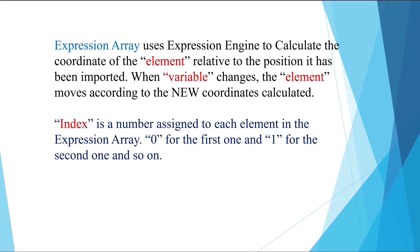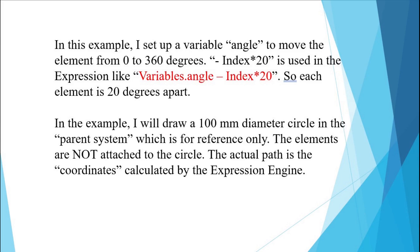Expression Array uses the expression engine to calculate the coordinate of each element relative to the position it has been input. When the variable changes, the element moves according to the new coordinate calculated. The index is a number assigned to each element in the expression array — 0 for the first, 1 for the second, and so on. In this example, I set up a variable 'angle' to move elements from 0 to 360 degrees, with minus index times 20 used in the expression, so each element is 20 degrees apart.